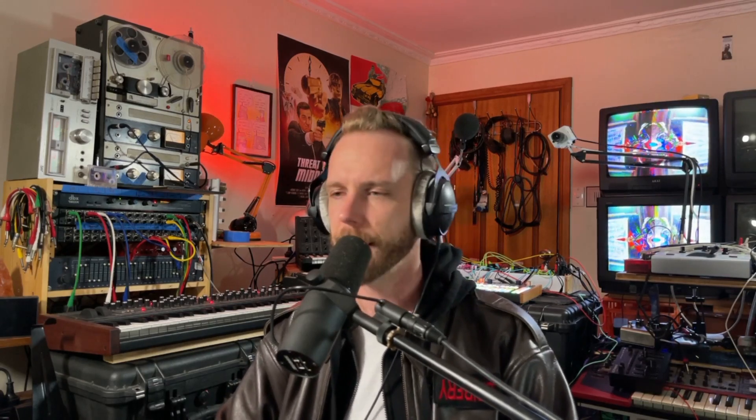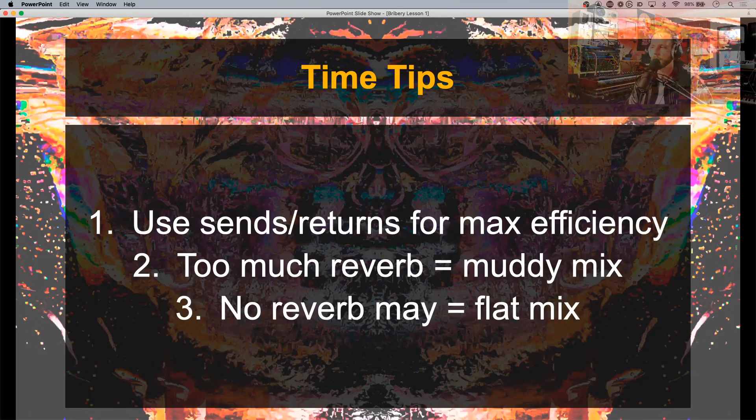So if we put everything through reverb, all of a sudden our track might feel like it's at the back of a hall — which might be what you're going for, but it might not be. The other one is delay, and this is actually one that's really handy if you are struggling with reverb and you're like it's always too much or always too little — in that case, swap it out for a delay and see if it does better, because that can sometimes fix the problem. When it comes to your time tips: use sends and returns for maximum efficiency. There are a bunch of different reasons why you should use sends and returns, and I will go into detail in a later lesson.